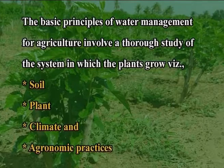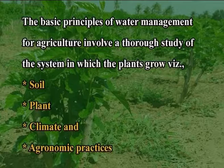The basic principles of water management for agriculture involve a thorough study of the system in which the plants grow, namely soil, plant, climate and agronomic practices. It involves the optimised application of water over the area to meet the water needs of the plants. The ultimate aim in scientific water management is to obtain a high benefit-cost ratio through economic yields per unit of water used.